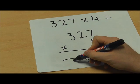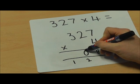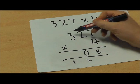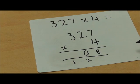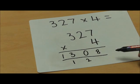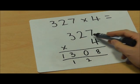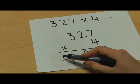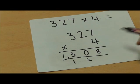8 add 2 is 10, so I'm going to write 10 like that. And then finally, 3 multiplied by 4 is 12, add the 1 equals 13, which means that my answer to 327 times 4 is 1308.